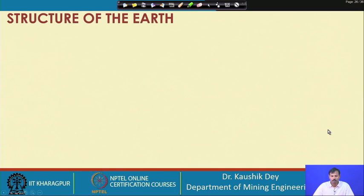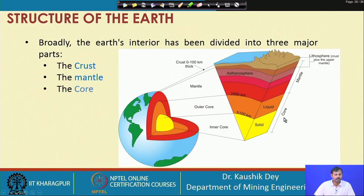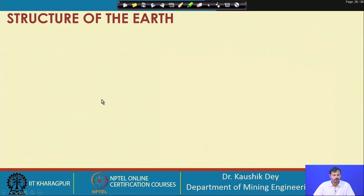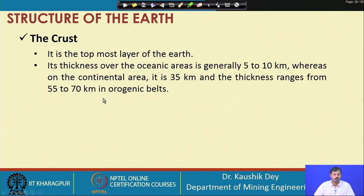The composition of the earth crust is now clear. The earth interior consists of the inner core, outer core, mantle, and crust. Our activities are limited to the earth crust only. The crust is the topmost layer of the earth — its thickness is 5 to 10 kilometers under the ocean and about 35 kilometers on the continental area, sometimes going up to 55 to 70 kilometers.